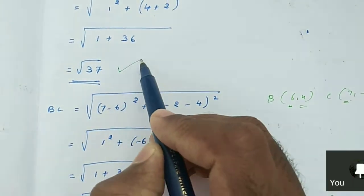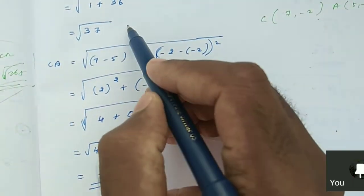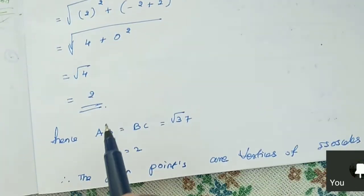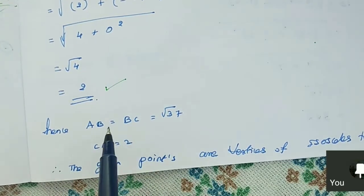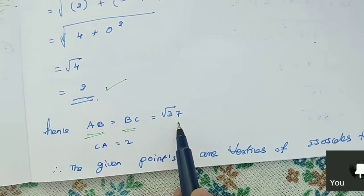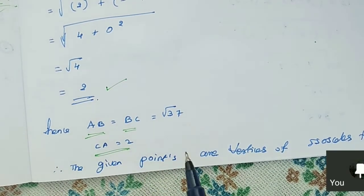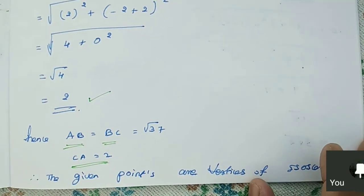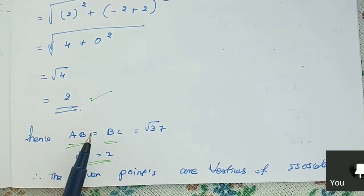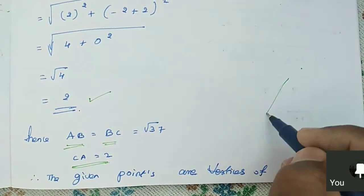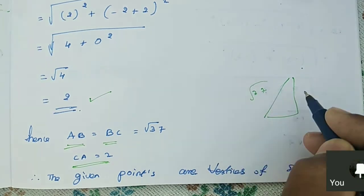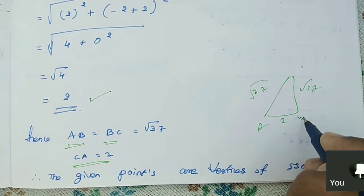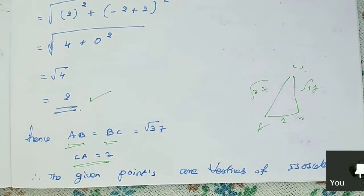From this, we found AB = √37, BC also = √37, and CA = 2. Hence, AB and BC equal √37 and CA equals 2. Now you can tell me, is it an isosceles triangle or not? Very good. Because the two sides are equal. In an isosceles triangle, two sides are equal: √37 and √37. So we conclude that it is an isosceles triangle.